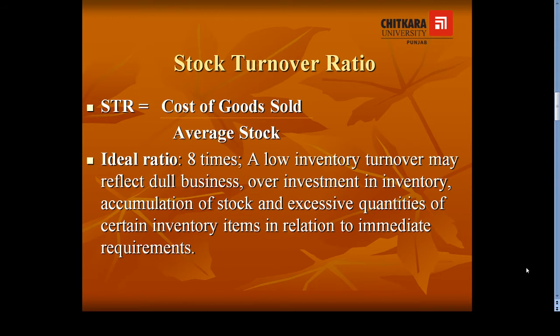Next is average stock. Average stock will be calculated by adding opening stock and closing stock, divided by 2. In this manner we will calculate Stock Turnover Ratio. The ideal Stock Turnover Ratio is 8 times. That means higher the ratio, better it is, and a low ratio reflects dull or ineffective utilization of stock.